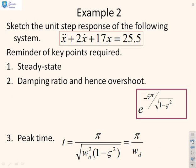Second example then. So sketch the unit step response for the following system. So I've got ẍ + 2ẋ + 17x = 25.5. First of all, let's look at the steady state. So the steady state comes from 17x = 25.5, or x = 25.5/17, which is 1.5. So there's the steady state.